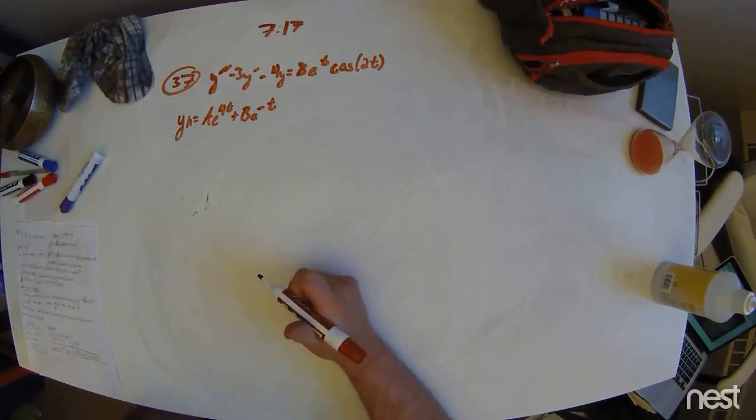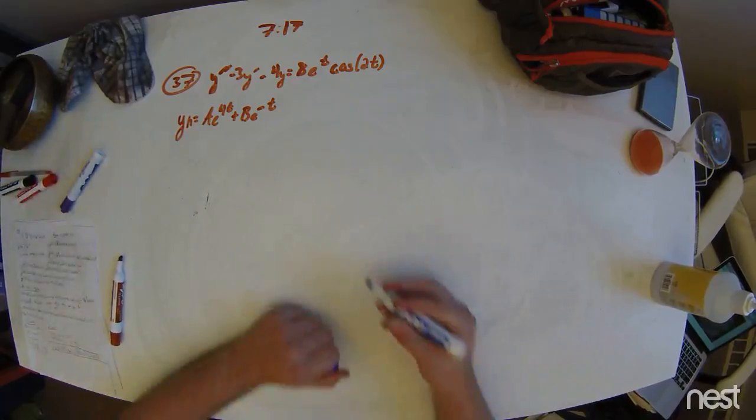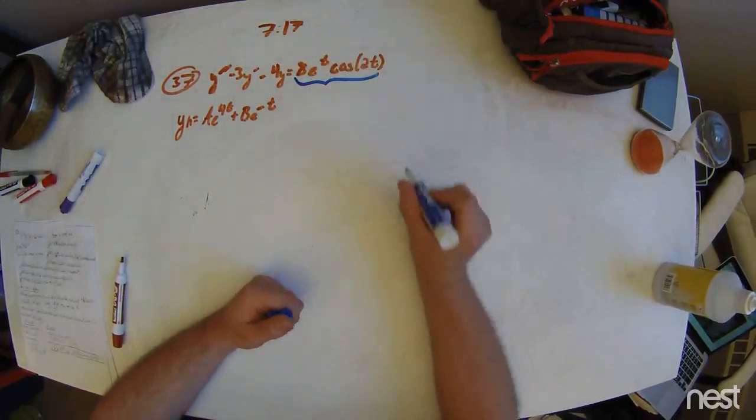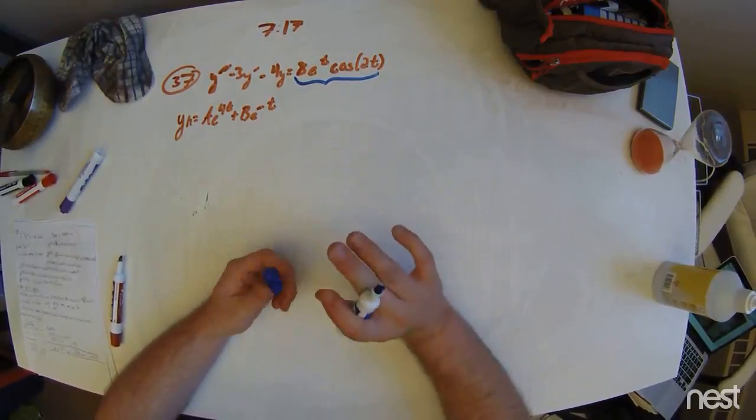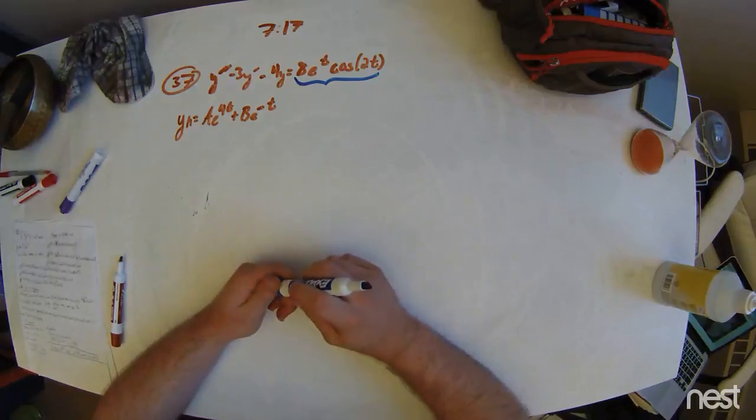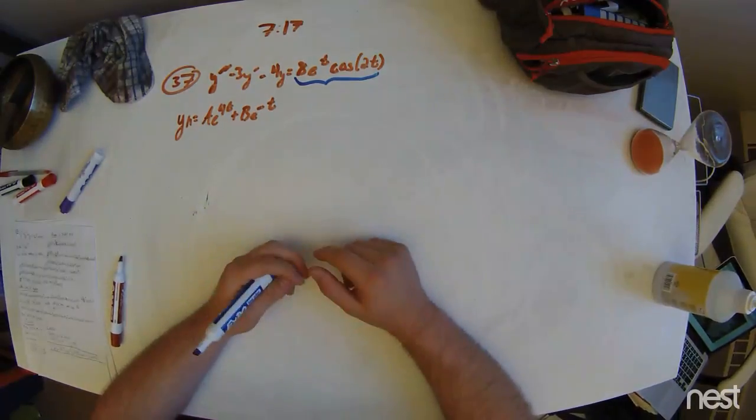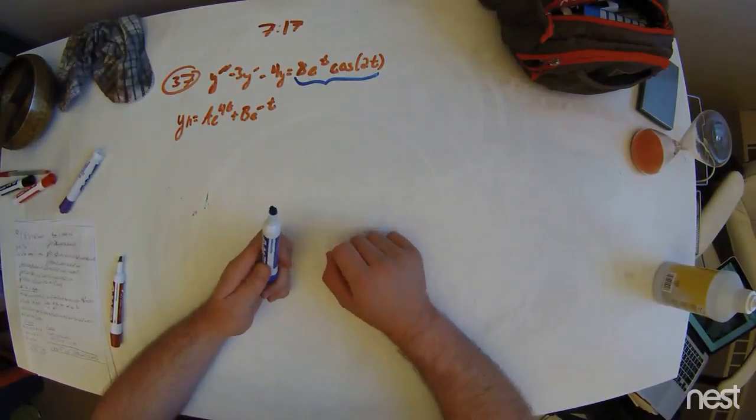Now, however, this particular solution over here, or particular, looks a little different from the previous ones. It's a product of different elements: an exponential and trigonometric function.